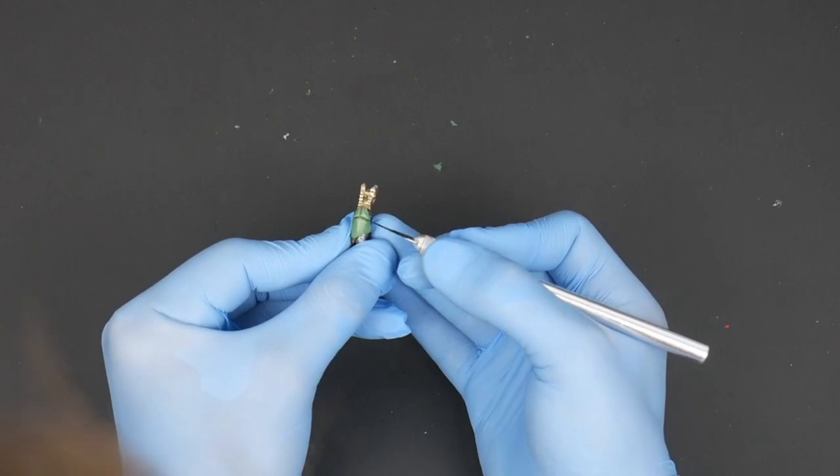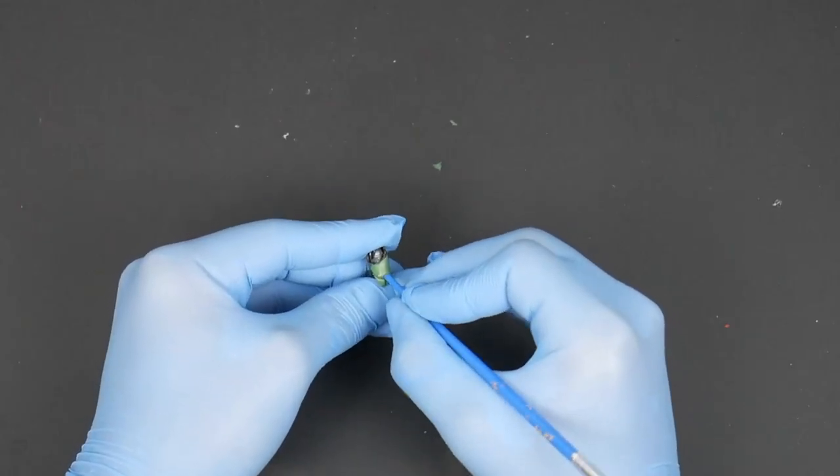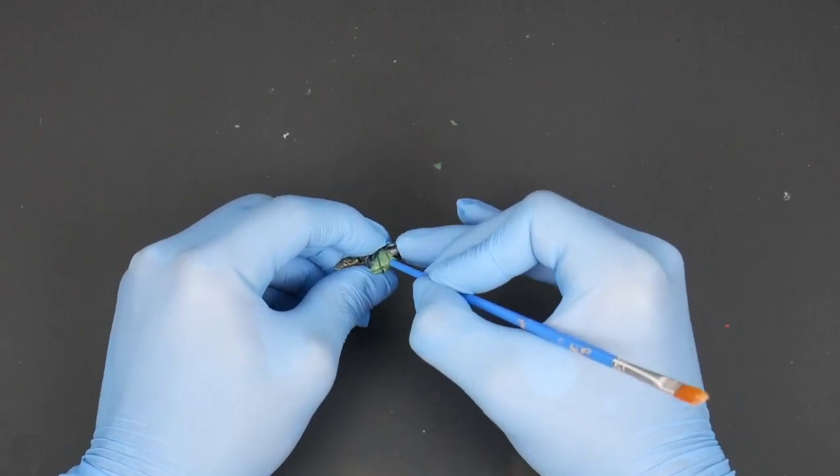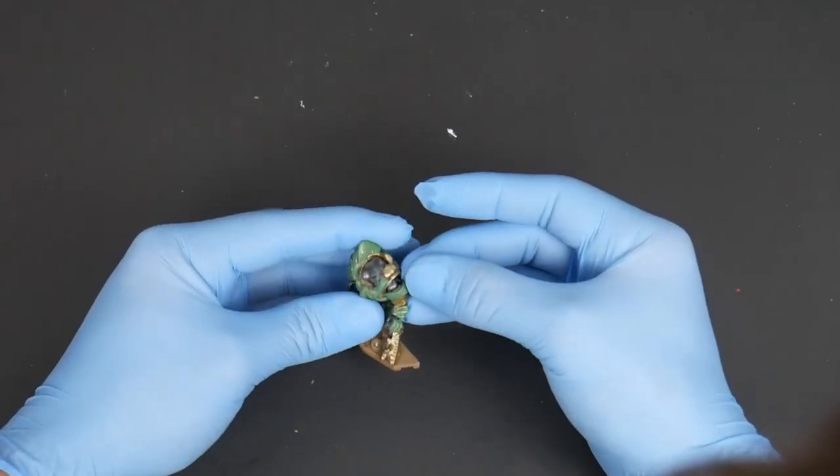Then I also moved on to these leg guards here. Now these were pretty simple, just some lines on the side, and then I used the back of a paintbrush to make this really cool little indent and I did that two times on the thigh guards. I thought this actually looked really awesome for how simple it was.